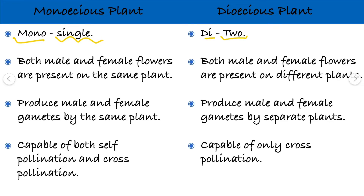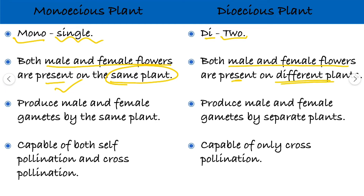So what does it mean? In case of monoecious plant, both male and female flowers are present on the same plant. In case of dioecious plant, male and female flowers are present on different plants.